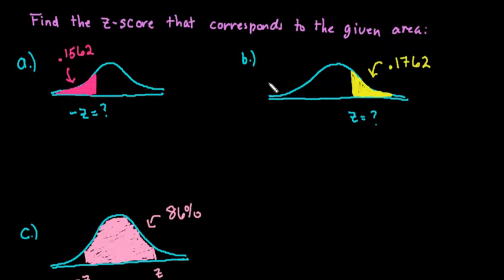So the first thing that we want to do is we have to remember that on our table majority of them give you the area shaded to the left. So if you have area shaded to the right, you must first find the area to the left of the shaded region.